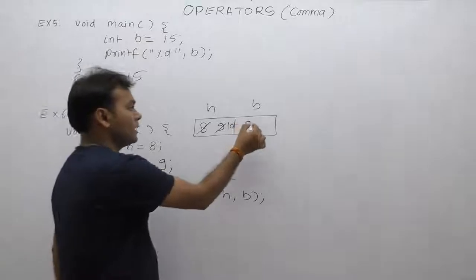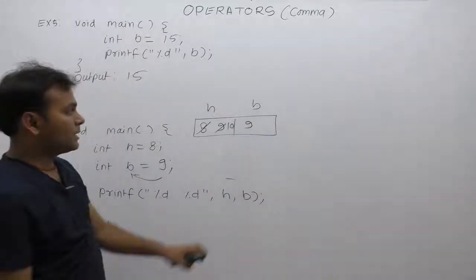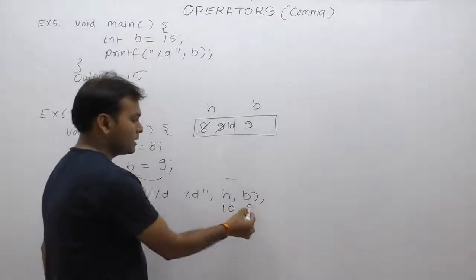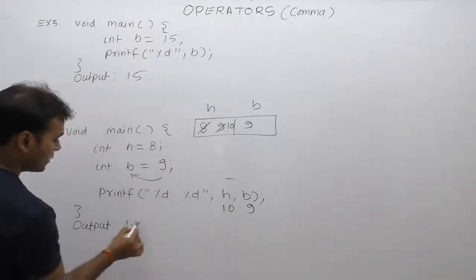b becomes nine. Therefore, the value of h is ten, the value of b is nine. The output is also ten comma nine.